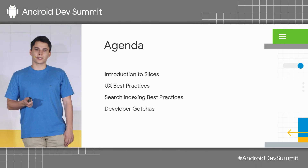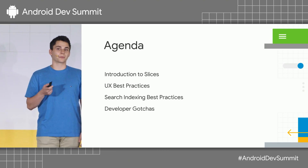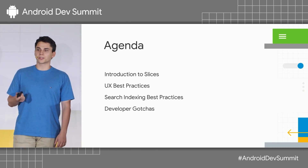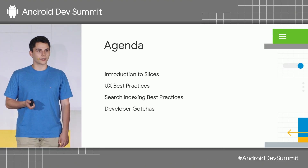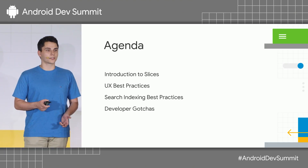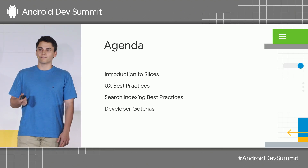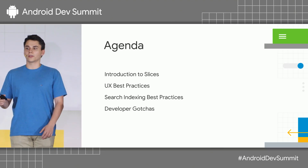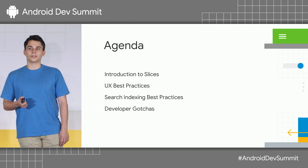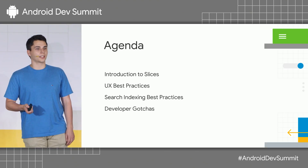There are a couple of things we're going to cover today. The first is an introduction, or reintroduction, to Android Slices, some user experience best practices in constructing your Slices, some more details on search indexing best practices, and finally, through the EAP we've been running over the summer, we've compiled a list of important developer gotchas to keep in mind when you start building Slices when they become available.